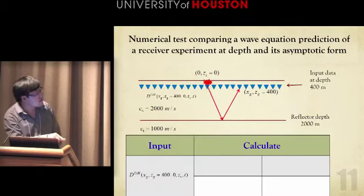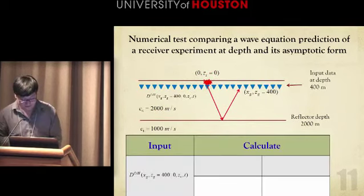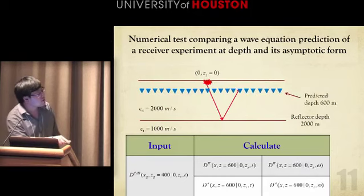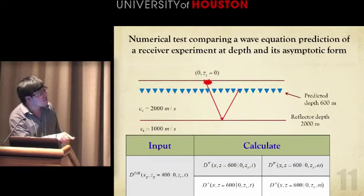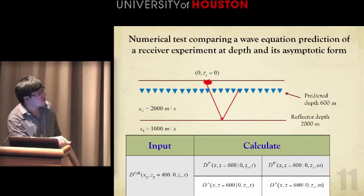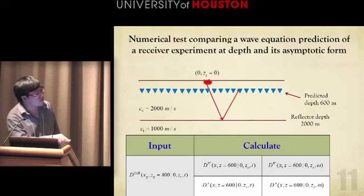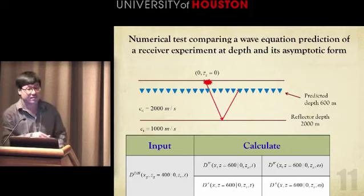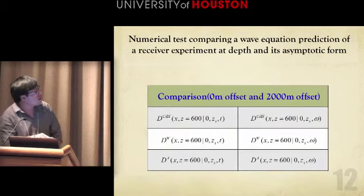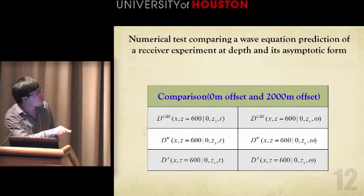This is the input data at z_g equal to 400 meters. And what we calculated, both from the wave method and its corresponding asymptotic form, is at depth z equal to 600. And we also compare the spectrum content in the time domain and the frequency domain. We compare this with this calculation.